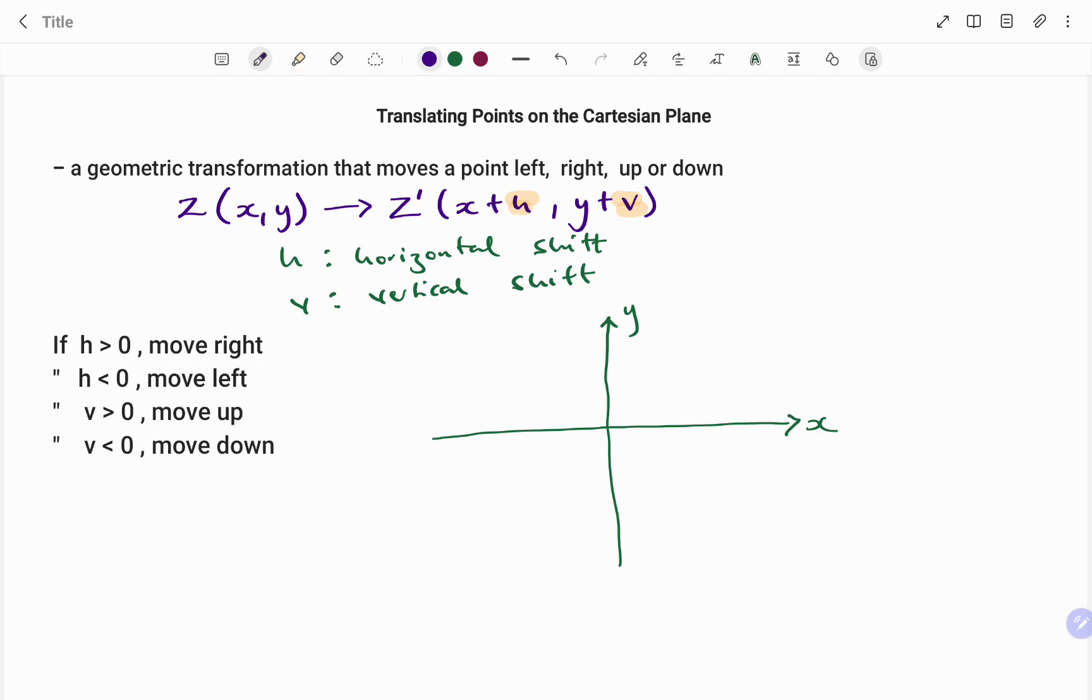Then if the value of h or the horizontal shift is greater than zero, that is it's positive, what that means is my point is going to move to the right. If the value of h is less than zero, then that means my point is going to move to the left.